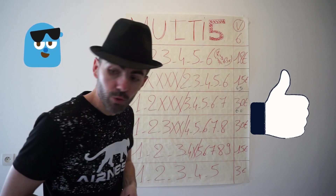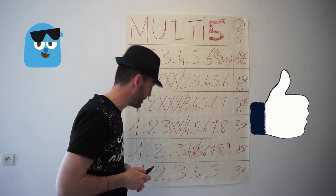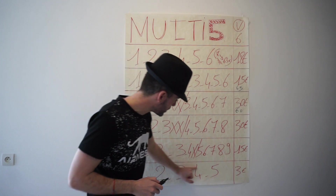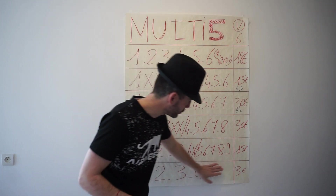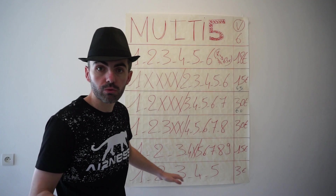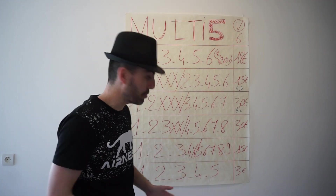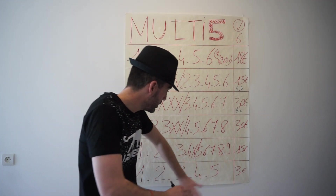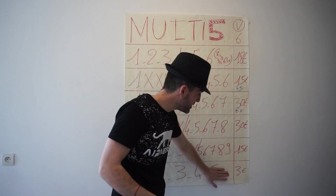C'est parti les amis ! Un petit pouce bleu sur les vidéos, bien évidemment. J'espère que vous avez la pêche. On démarre : premier jeu, très facile, 5 chevaux, multi en 5, à plat, 3 euros unitaire. Un jeu qu'on retrouve très souvent. J'ouvre la fenêtre, je balance 3 euros dans un petit quinté, date de naissance, pourquoi pas, pour le plaisir.